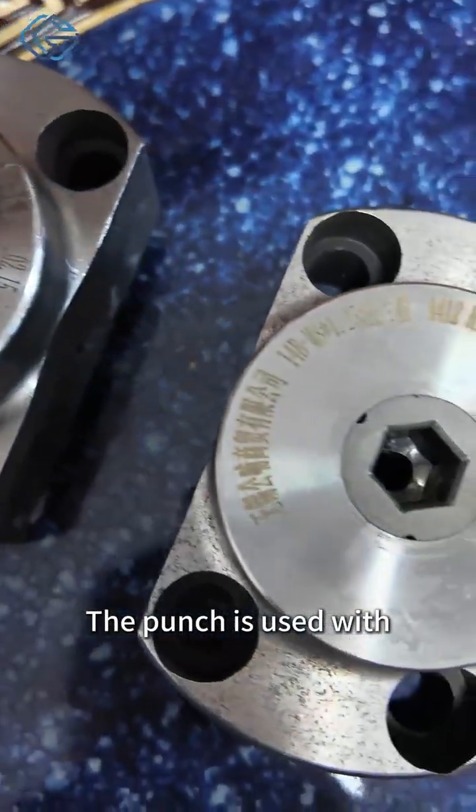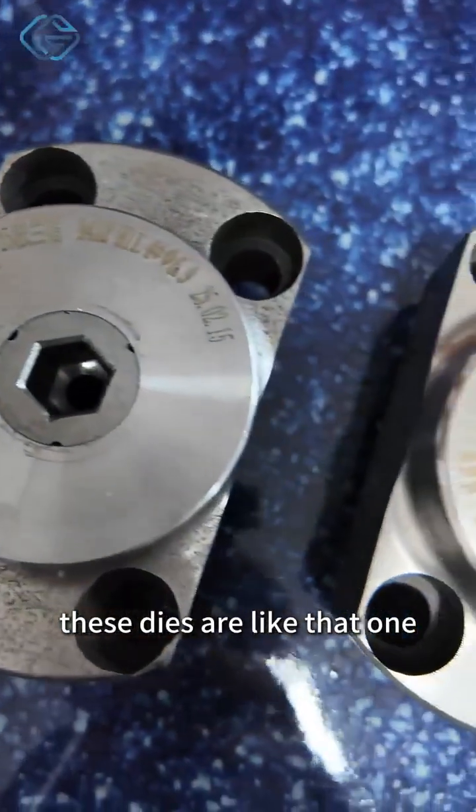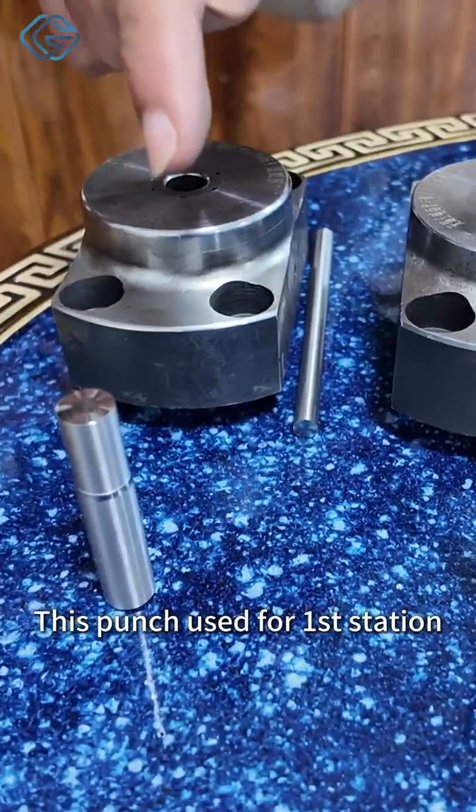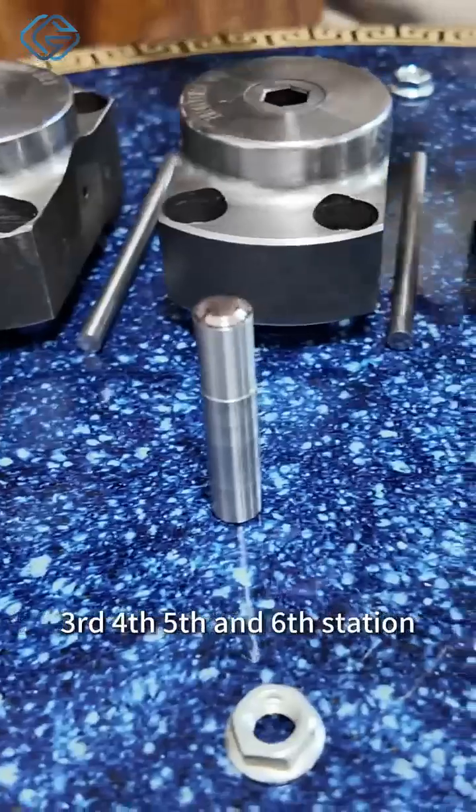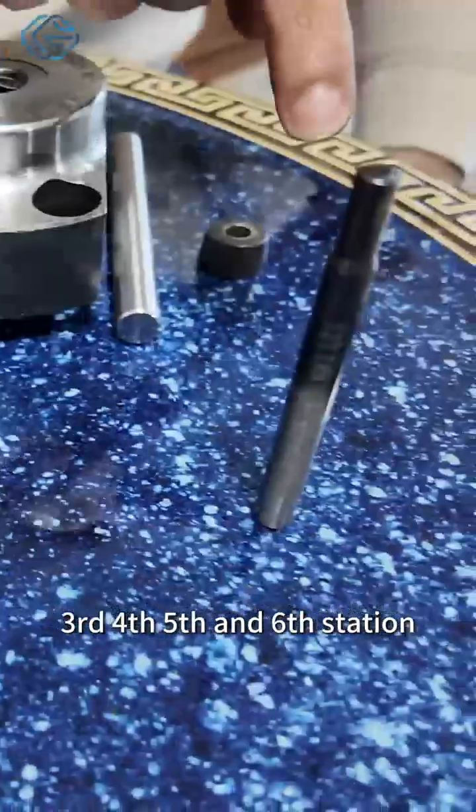Punches used with these dies are like that one. This punch used for first station. This one used at the second station, third, fourth, fifth and sixth station.